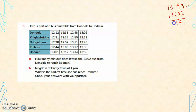5 minus 0 is 5, and 3 minus 3 is 0. So it is 51 minutes. The time it takes for the bus to reach Bodmin from Dondal is 51 minutes.